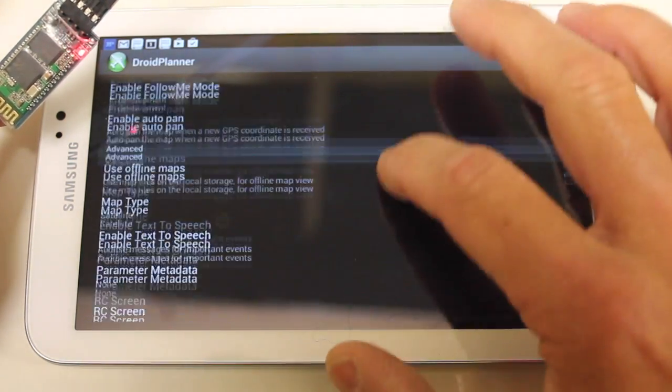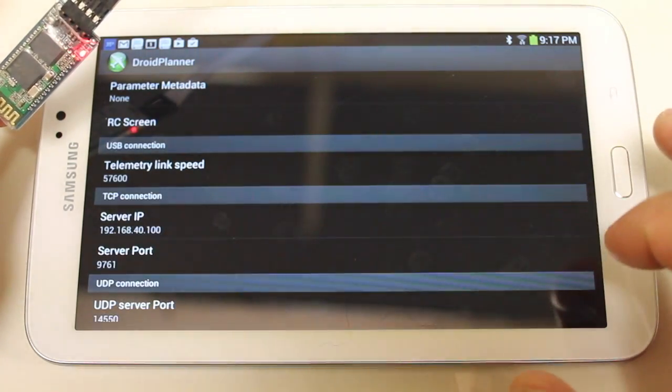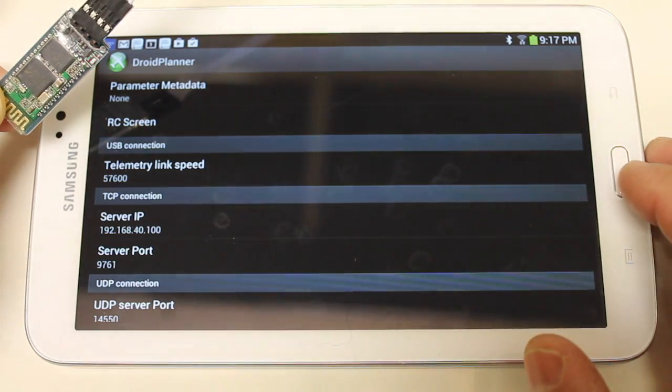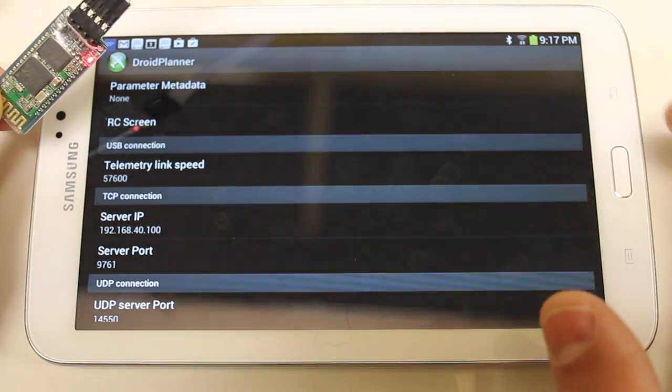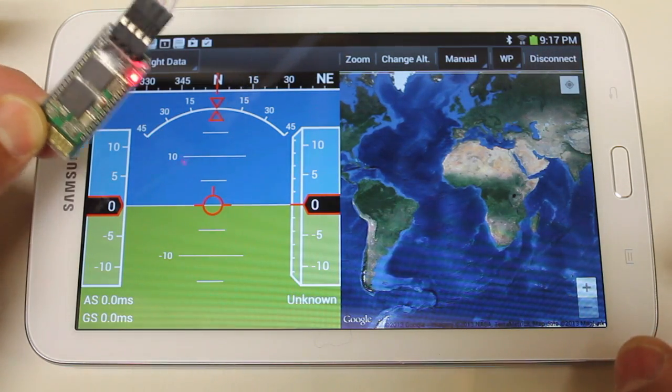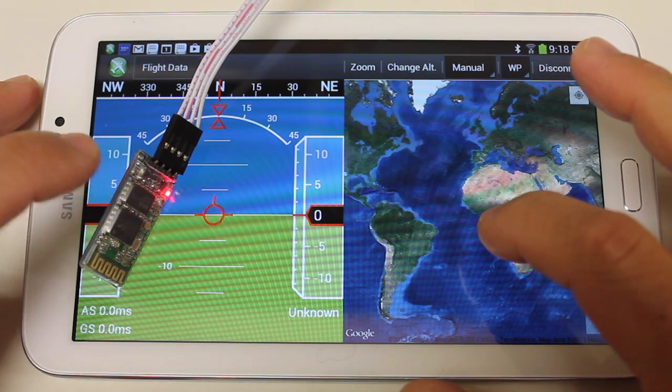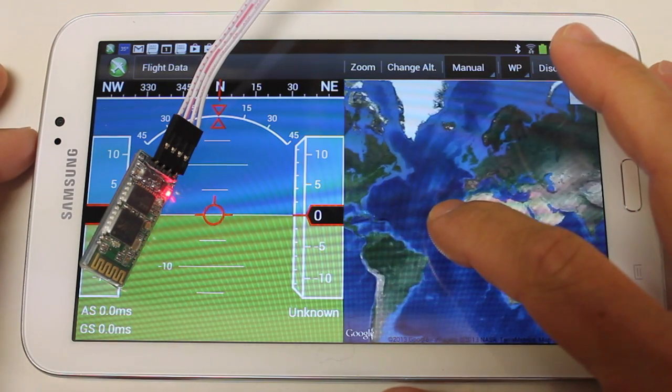And we'll make sure under settings that we have telemetry set to Bluetooth. And we want our telemetry speed to be 57.6, which we configured our module for. And let's go ahead and connect. Connected. And now you can see that we're connected here. That takes care of our configuration of our Bluetooth module and Droid Planner.